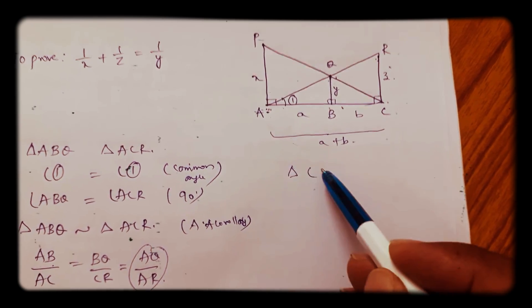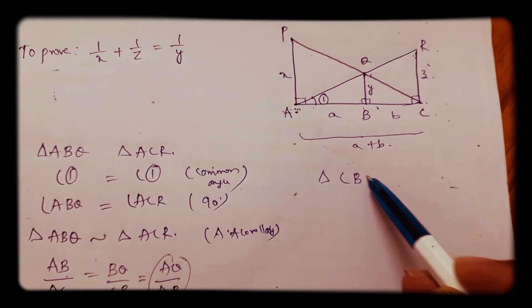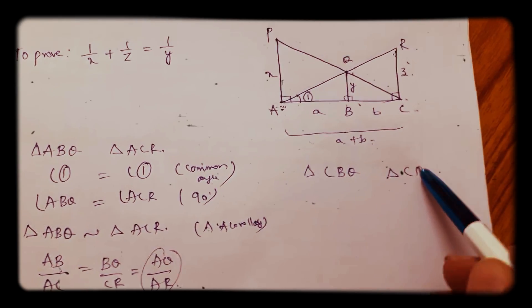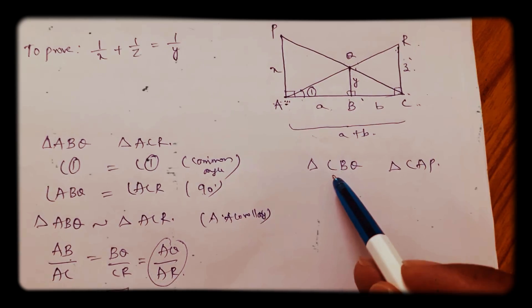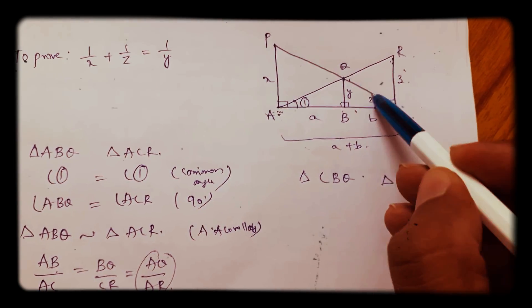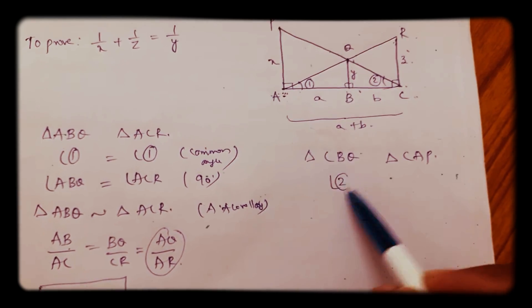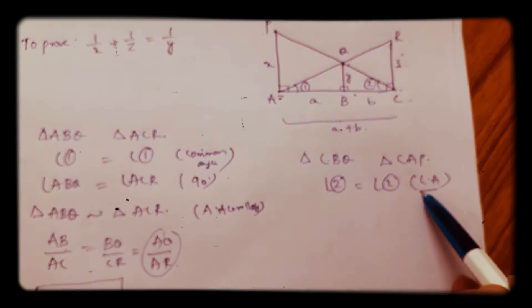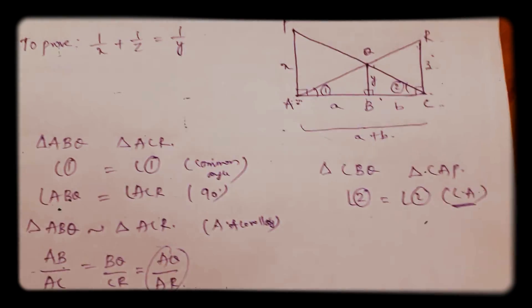Triangle CBQ and triangle CAP. Now here again, you can take this angle 2. Angle 2 equals angle 2 in both the triangles. We have angle 2, which is nothing but common angle.